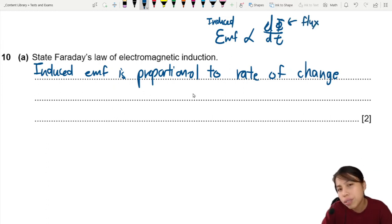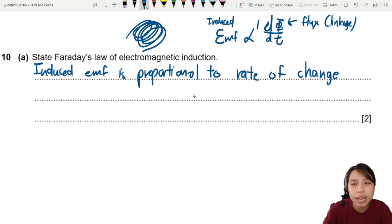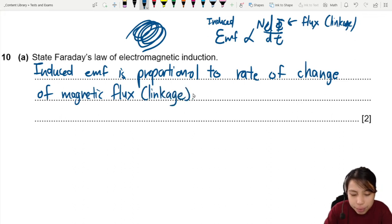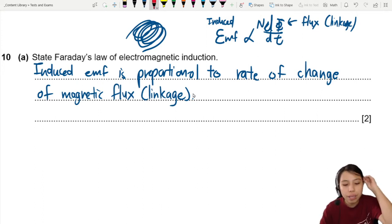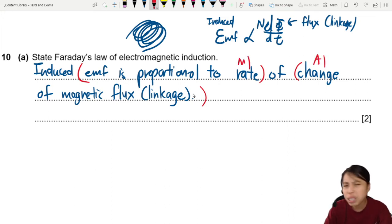Sometimes instead of just flux, you have many turns of a coil, so it's safer to say 'flux linkage', because sometimes you add an N for the number of turns. To get the best answer, say 'rate of change of magnetic flux linkage'. Two marks: one from EMF proportional to rate, then rate of change of flux linkage for the second. This is an M1 A1 combo — you must get the M1 first to be awarded the A1.